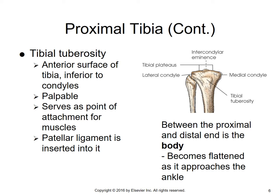That pretty much takes care of the proximal part of the tibia. Once again, we've got the two condyles — medial and lateral — the lateral condyle in articulation with the fibula, the tibial plateaus on top, the intercondylar eminence as two pointed processes, and the tibial tuberosity as a palpable bony landmark anteriorly. Moving distally, between the proximal and distal end is the body — also called the shaft or diaphysis — and this bone becomes flattened as it approaches the ankle area.